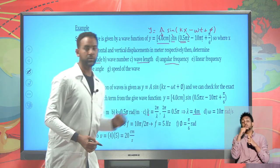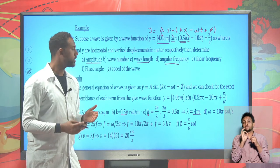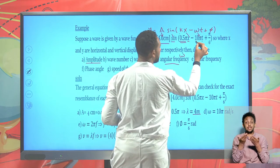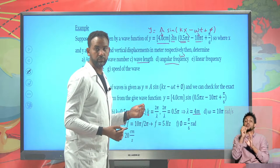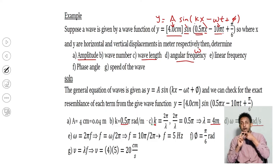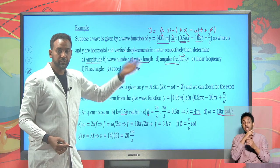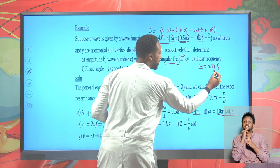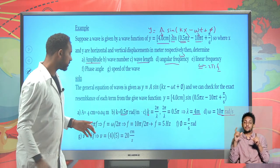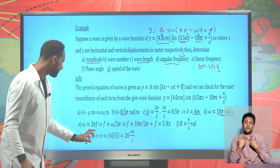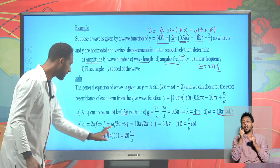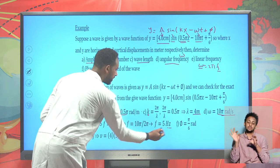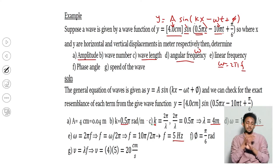Next, it asks for the angular frequency. The angular frequency ω is represented by the coefficient in front of the time variable t. So 10π rad/s gives us the angular frequency. The linear frequency can be determined using ω = 2πf. To find frequency: f = ω / 2π. Substituting, we have 10π / 2π, which gives us 5 hertz.